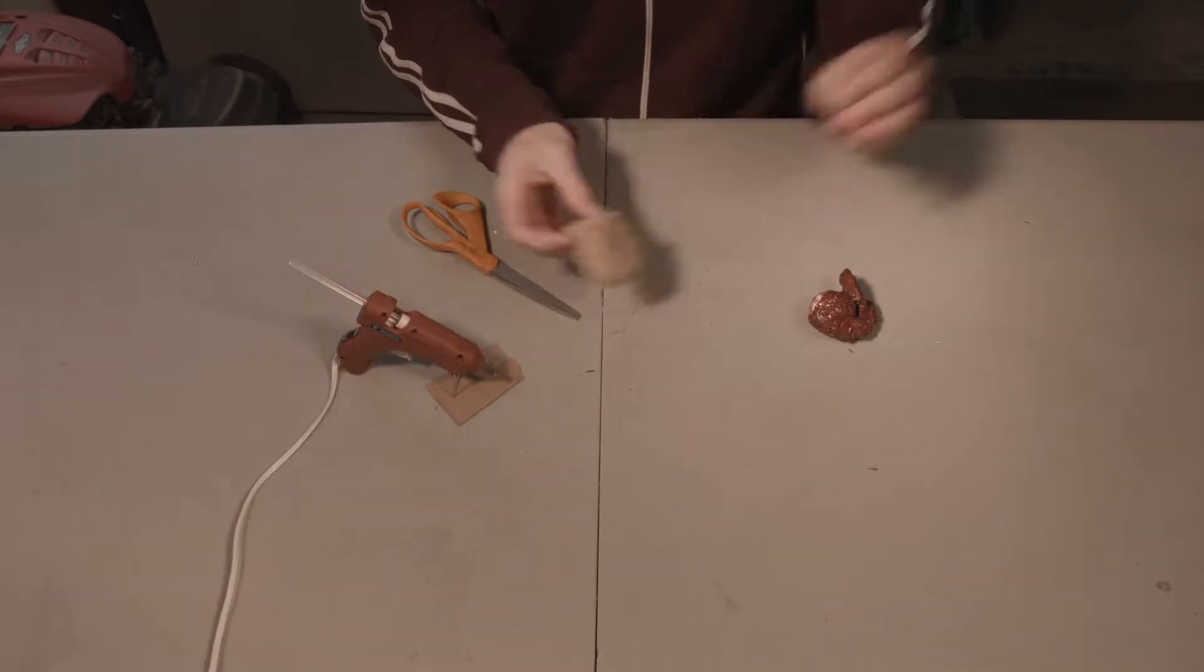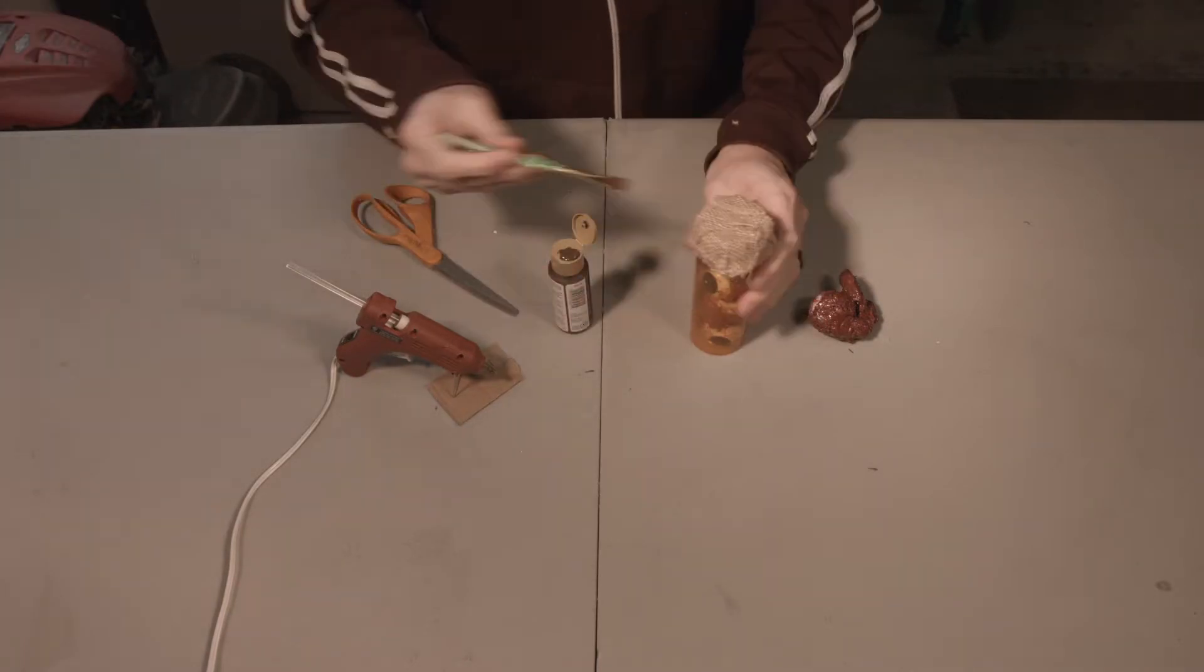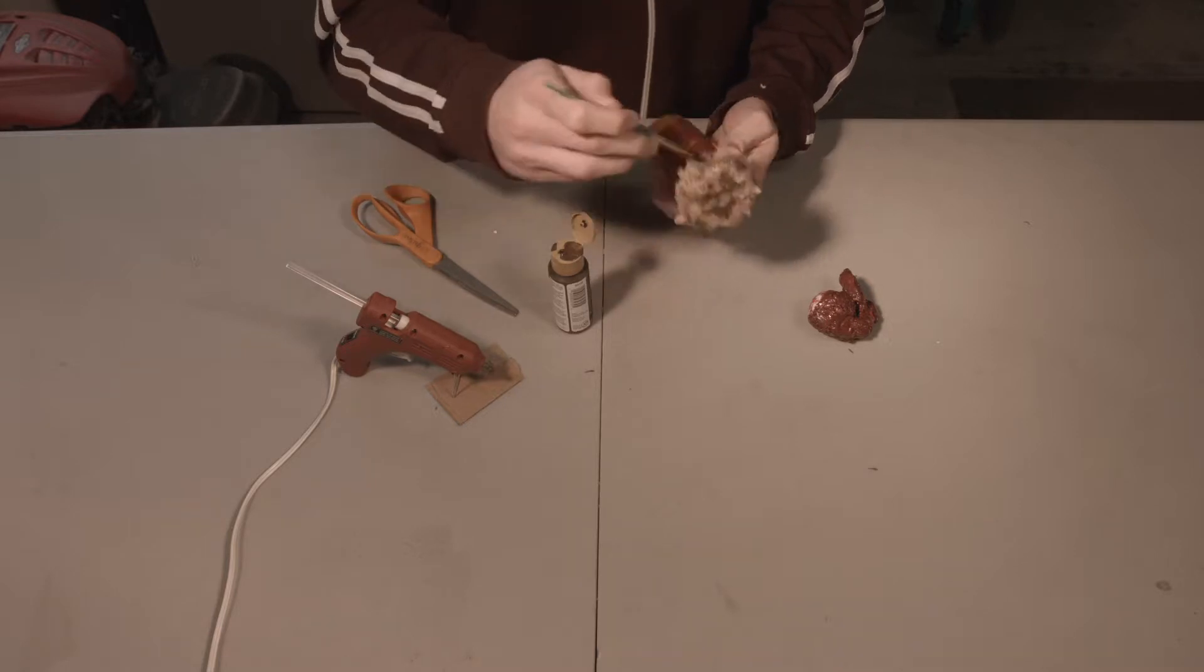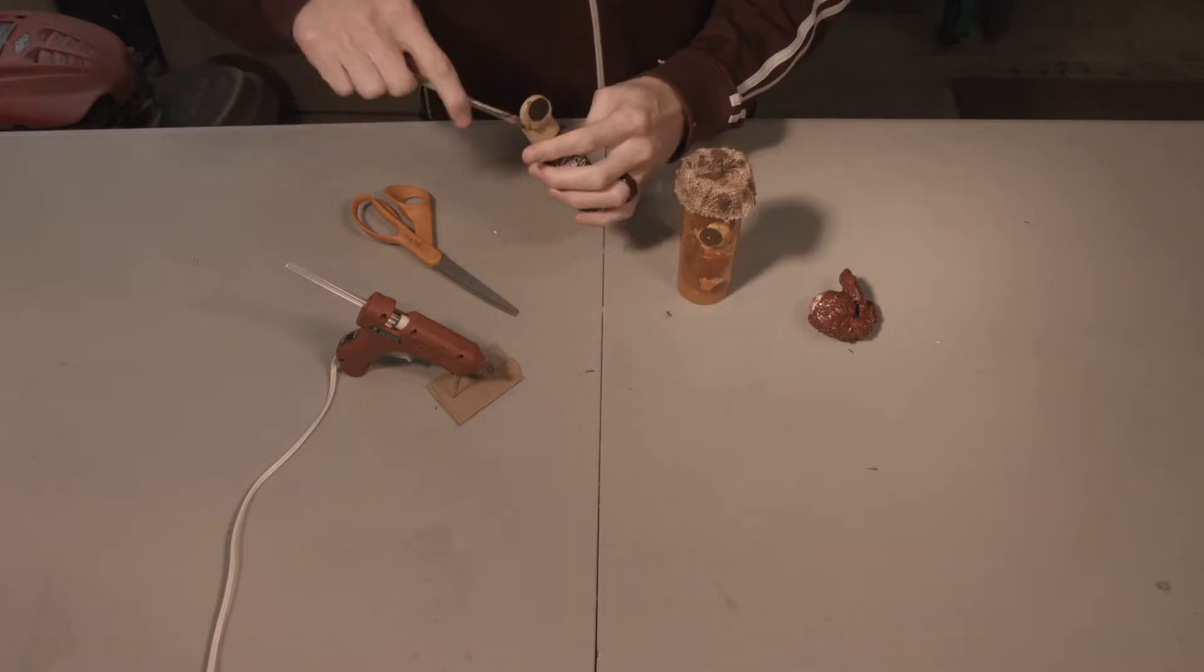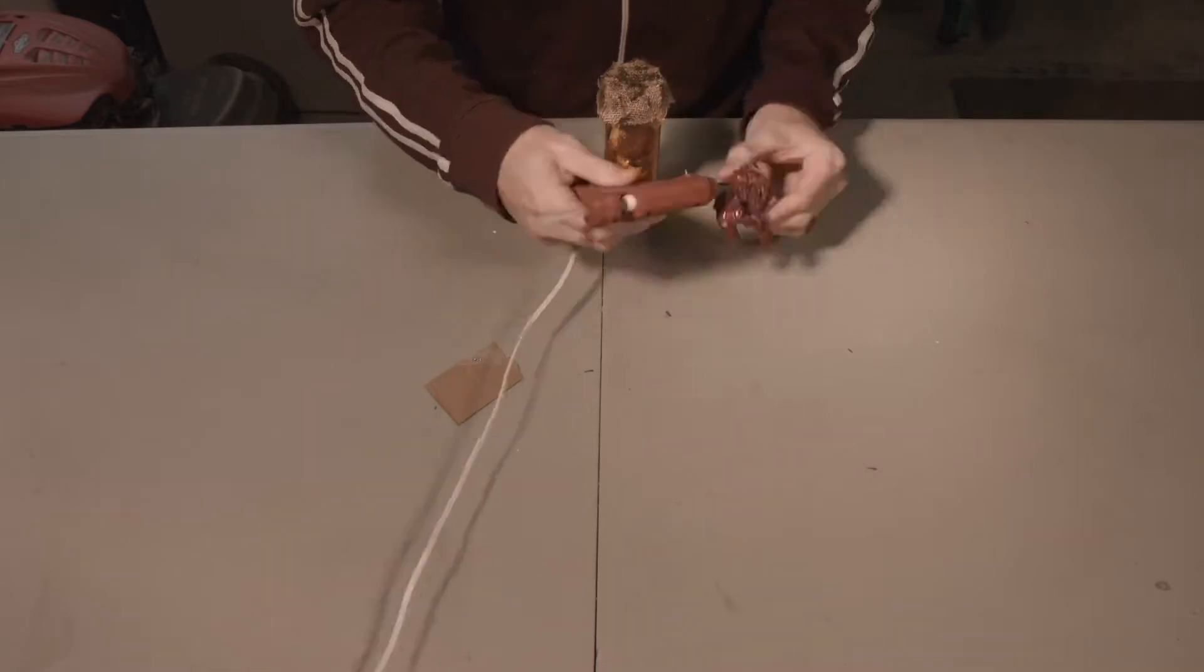After I put it on, I wanted to age the burlap a little bit more, so I just took some brown paint, just a little bit. As you see, when you paint the burlap, you only want to paint it here and there in certain parts. Don't cover the whole thing or else it will still look brand new, just darker color. To age it, you'll want to have sporadic parts painted throughout.